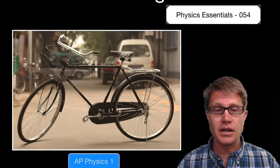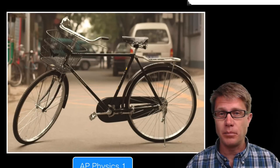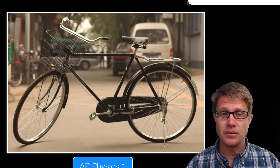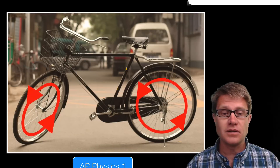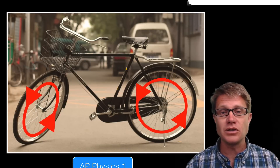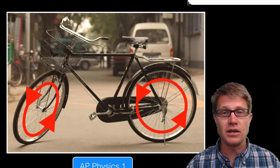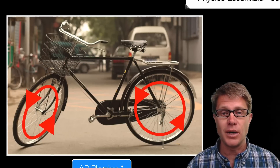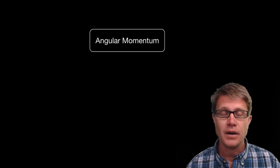So if you were to try to get on this bicycle and balance without the kickstand out, you are probably going to fall over. But as you start to bike, as these wheels pick up angular momentum, they are going to resist changes and it makes it easier for you to remain upright.